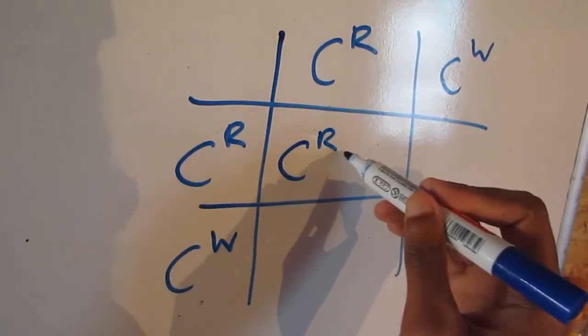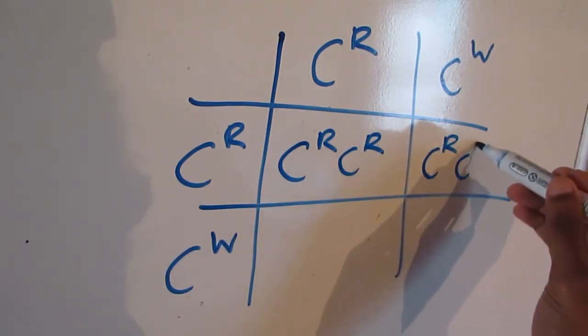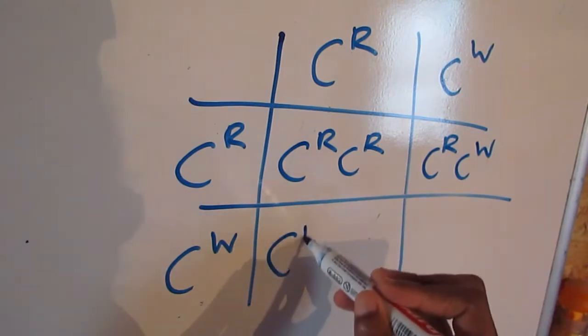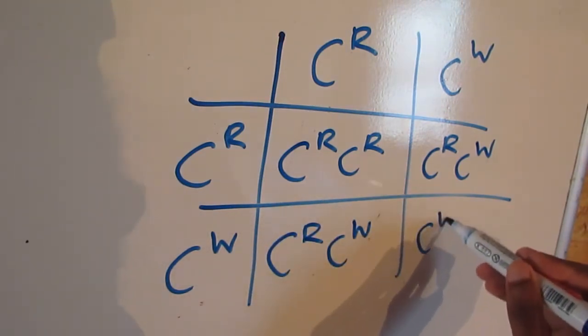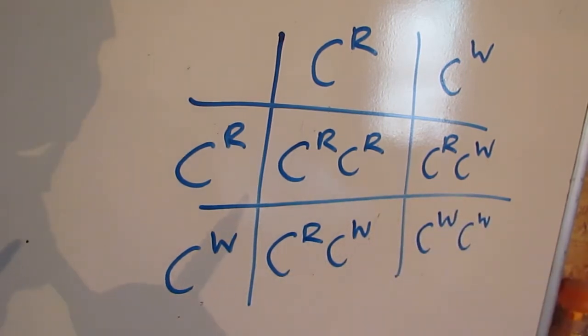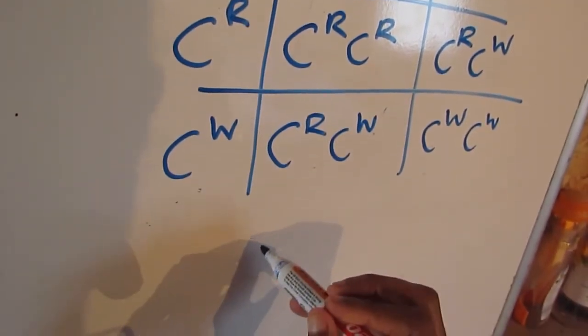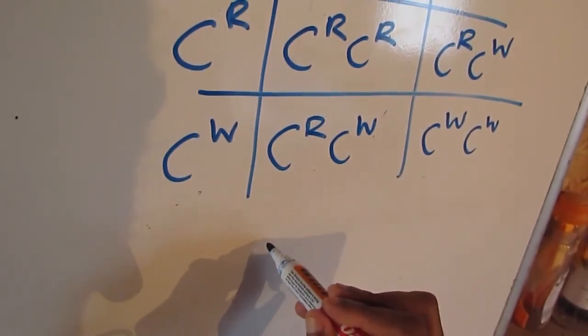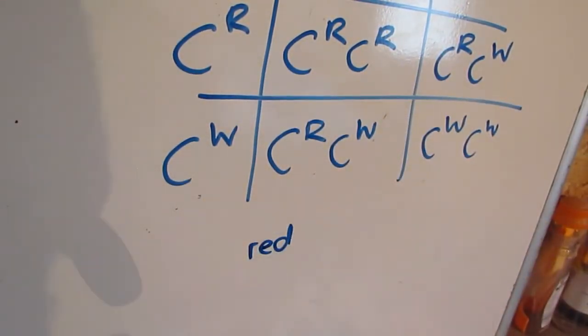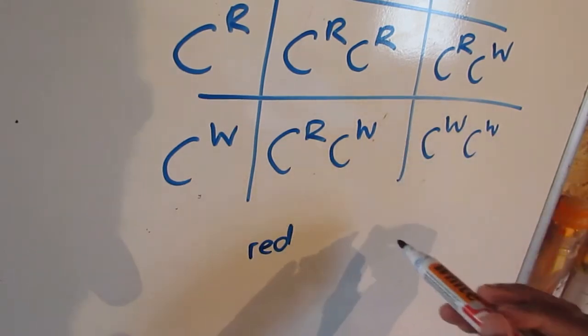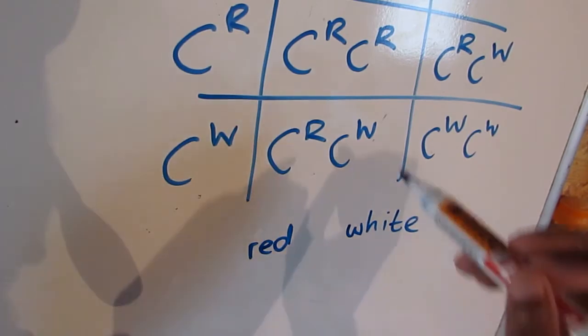So if we look at our offspring genotypes now, we should see that one of our offspring should be all red. So two alleles for red. One of our offspring should have two alleles for white. So all white. But we should have two of our offspring being pink. So having one allele for red and one allele for white.